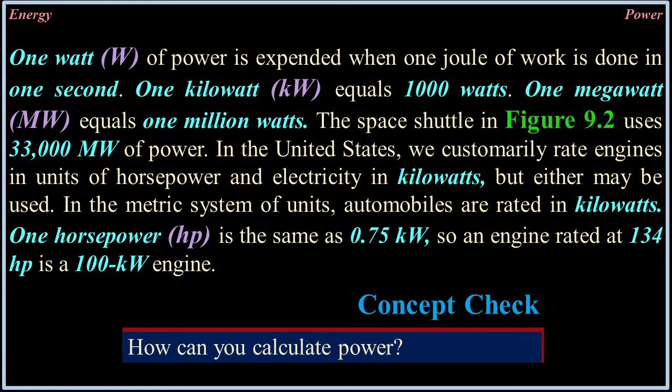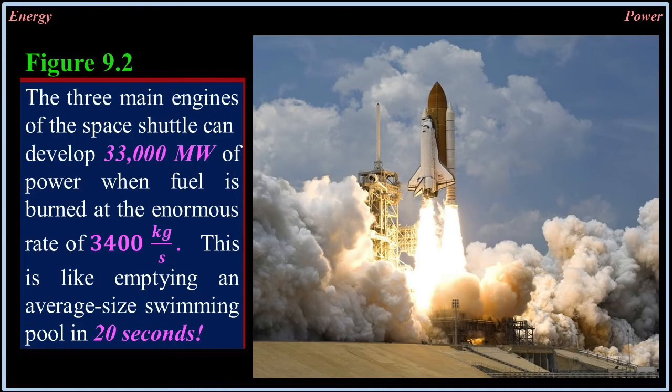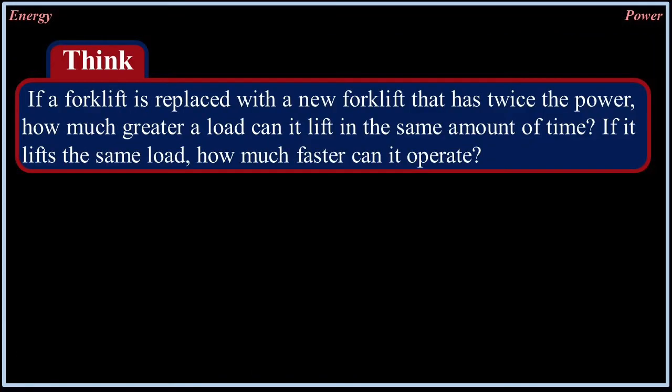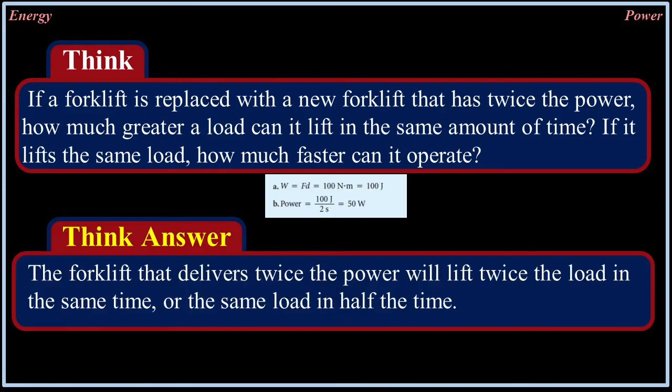The three main engines of the space shuttle can develop 33 million megawatts of power when fuel is burned at the enormous rate of 3,400 kilograms per second — like emptying an average-sized swimming pool in 20 seconds. Think: if a forklift is replaced with one that has twice the power, it can lift twice the load in the same amount of time, or the same load in half the time.